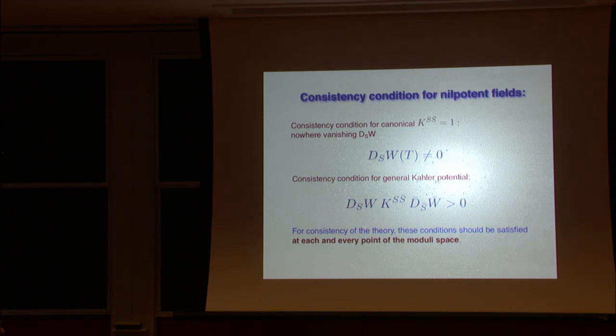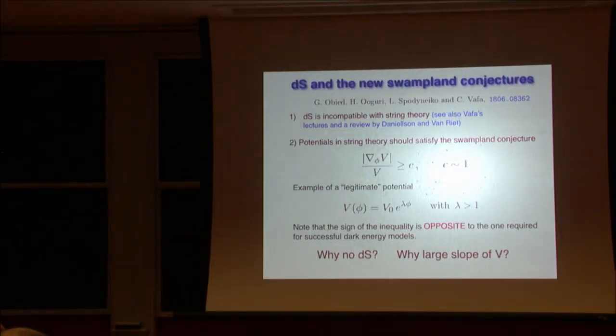Now, when we study everything in terms of nilpotent fields, there are some rather unusual conditions which should be satisfied by the theory. So if you have superpotential, the derivative of the superpotential with respect to nilpotent superfield must be not equal to zero. Otherwise, the theory, even if it is violated in one point in the model space, the theory becomes inconsistent. And that is if you have canonical Kähler potential. But if you have a generic Kähler, then it is written in a slightly more complicated way. So that's important that they must be satisfied at every point of the model space.